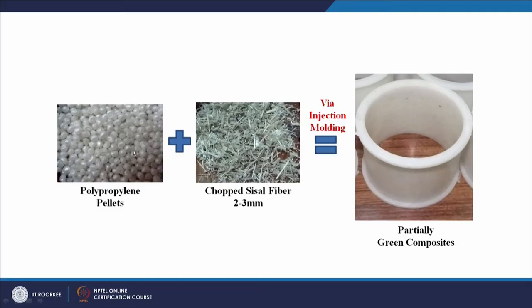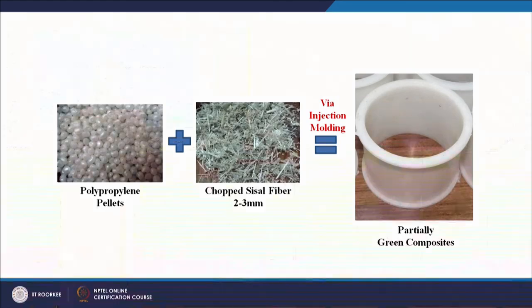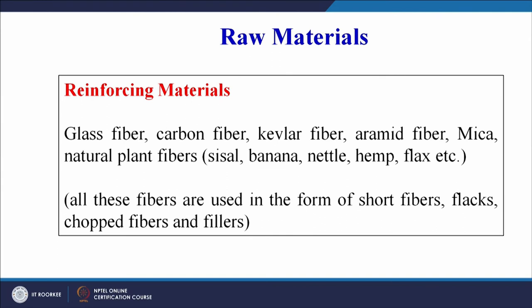For example, polypropylene pellets combined with chopped sisal fibers of two to three millimeter length can be processed to create a partially green composite — polypropylene is non-biodegradable but the sisal is a natural fiber. The shape of the resulting product is determined by the mold geometry.